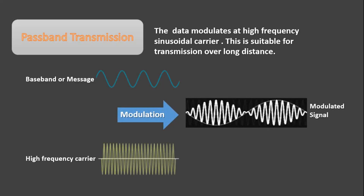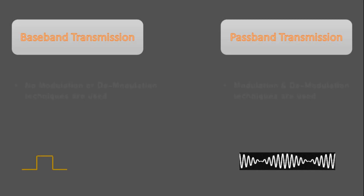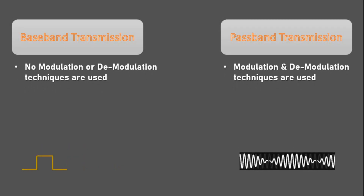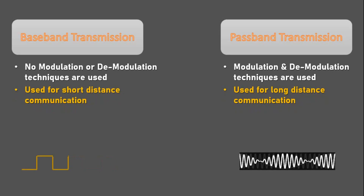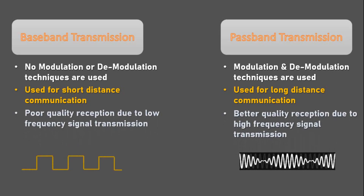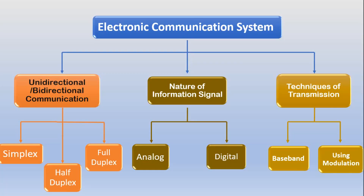There are some differences between baseband and passband transmission. First, no modulation or demodulation techniques are used in baseband transmission, whereas modulation and demodulation techniques are used in passband transmission. Second, baseband transmission is used for short-distance communication, while passband transmission is used for long-distance communication. Third, baseband transmission sometimes results in poor quality reception due to low-frequency signal transmission, whereas passband transmission achieves better quality reception due to high-frequency signal transmission.